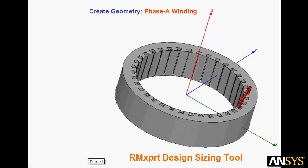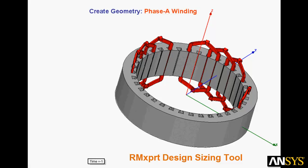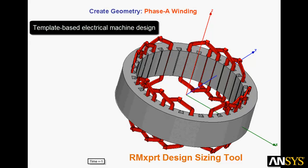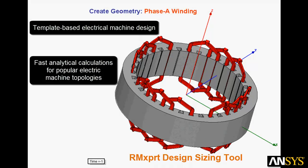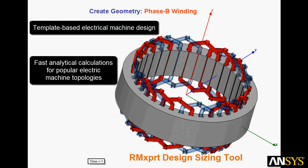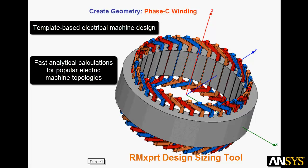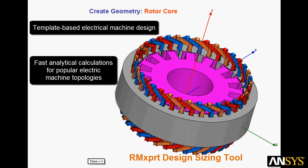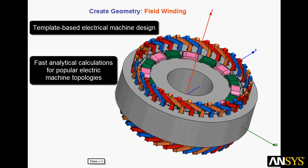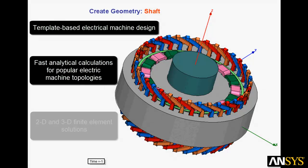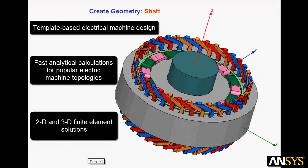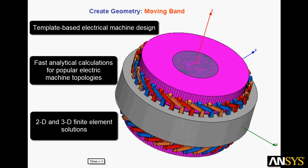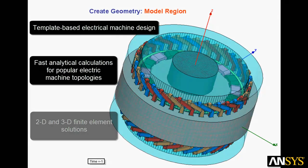The first step in the flow is to apply the ANSYS RMXpert design sizing tool. RMXpert is a template-based electrical machine design tool that provides fast analytical calculations of machine performance to allow engineers to zero in on an appropriate design. You can select from many motor types and create custom designs to your specifications quickly. It then creates ready-to-solve 2D and 3D models for detailed transient finite element calculations in ANSYS Maxwell.